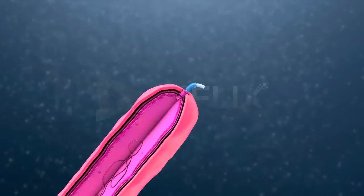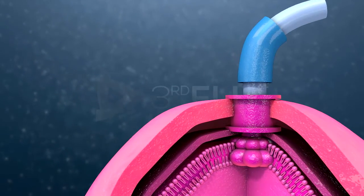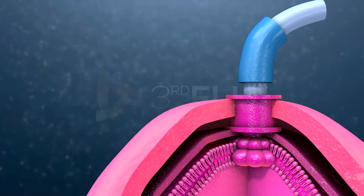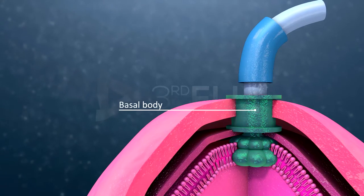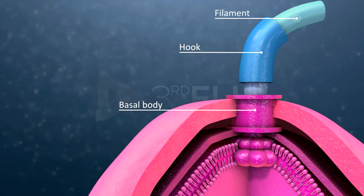The bacterial flagellum is made up of three parts: the basal body, the hook, and the filament.